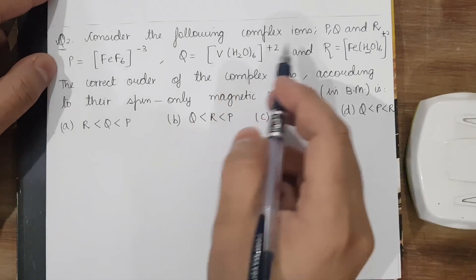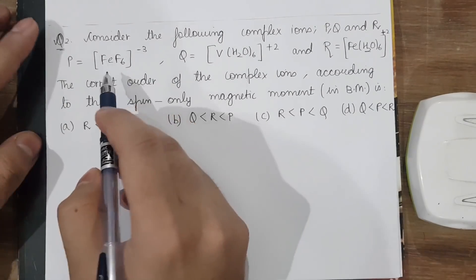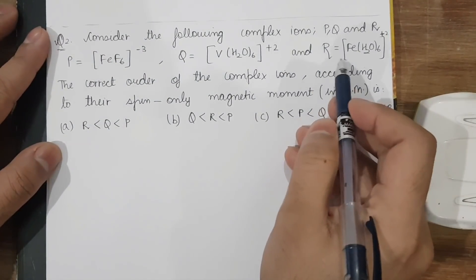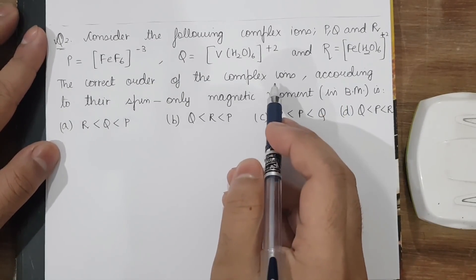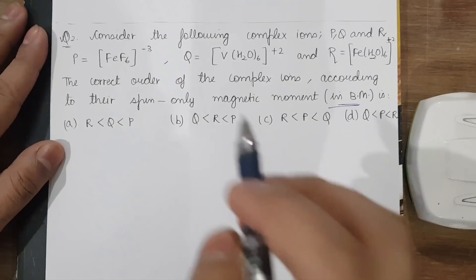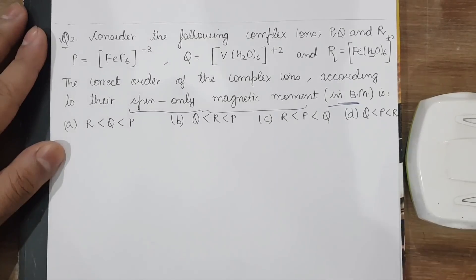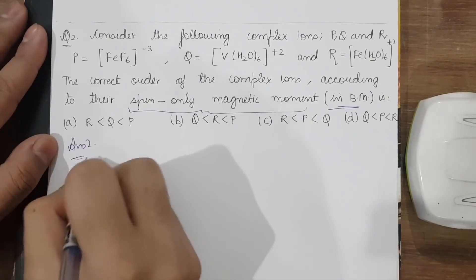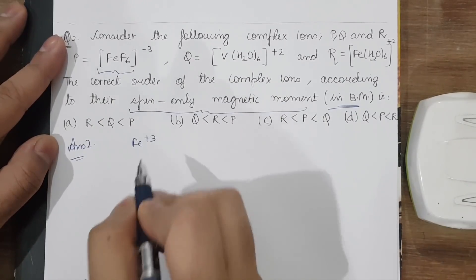The next question: we have three complex ions — P = [FeF₆]³⁻, Q = [V(H₂O)₆]²⁺, and R = [Fe(H₂O)₆]²⁺. We need to find the correct order according to their spin-only magnetic moment in Bohr magnetons. We calculate this from the oxidation state. For Fe³⁺: Fe is 3d⁶4s², so Fe³⁺ gives 3d⁵.